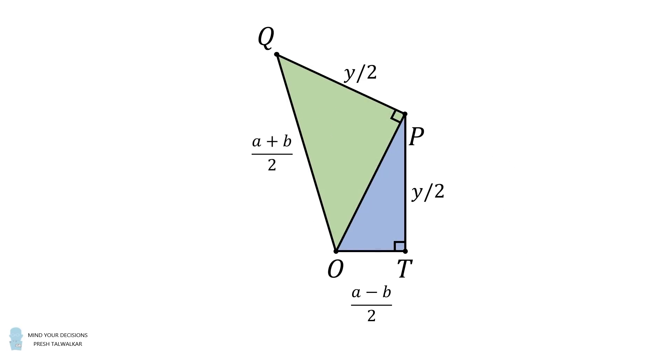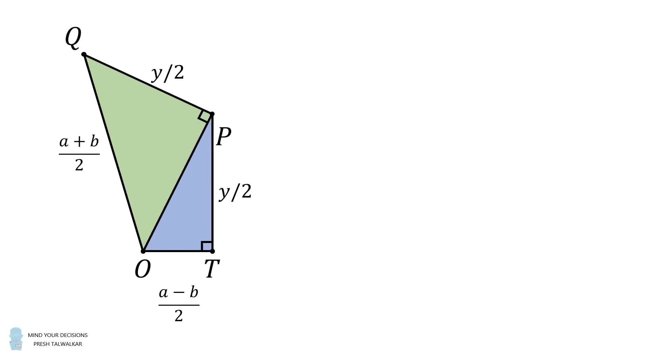We will now calculate the length OP squared in two different ways. First let's calculate it in the blue triangle. It will be equal to the quantity a minus b all over 2 squared, plus y over 2 the quantity squared.